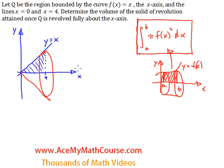So let Q be the region bounded by the curve f(x) equals x, the x-axis, and the lines x equals 0 and x equals 4. So this is Q right here.